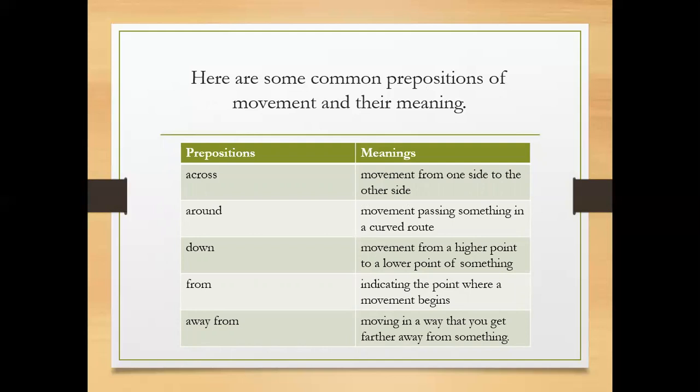The next word is 'around' - movement passing something in a curved road. The world around us is really beautiful. The next word is 'down' - movement from a higher point to a lower point of something. He climbed down the ladder.